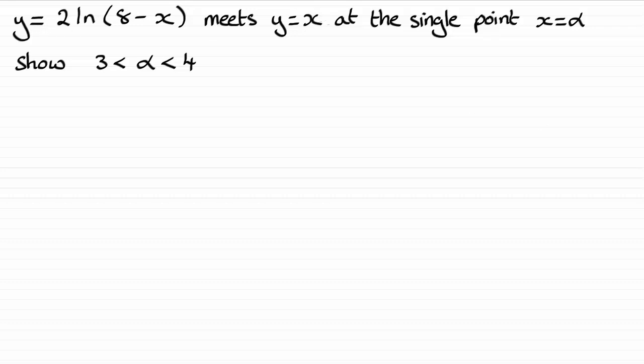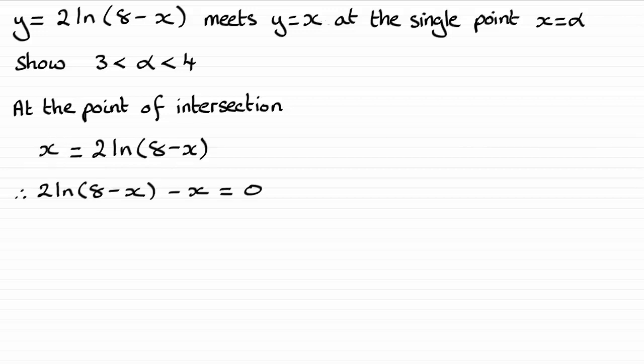So at that point of intersection, x will equal 2 times the natural log of 8 minus x. Then I'm going to subtract x from both sides so I get an equation that equals 0. And I'm going to let the left hand side of this equation be f of x.